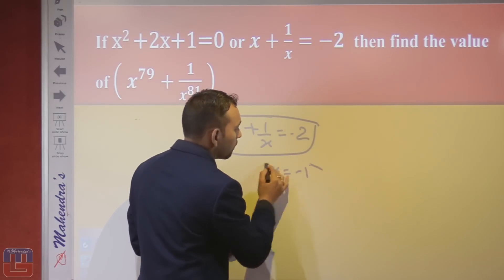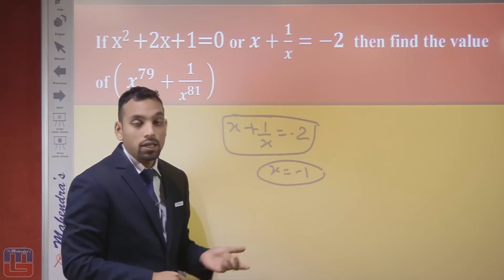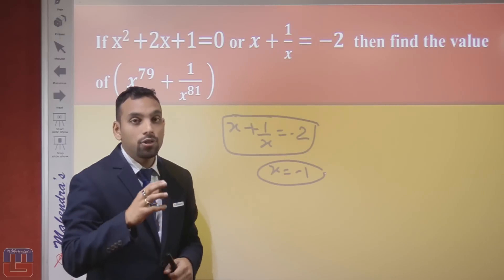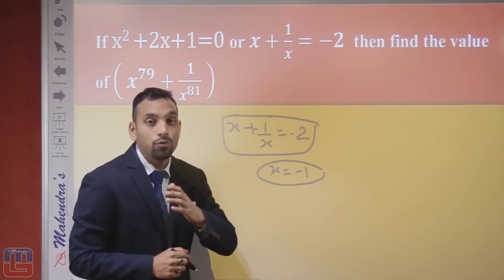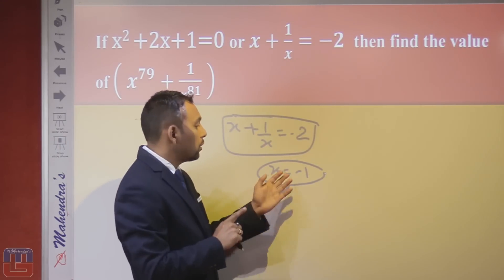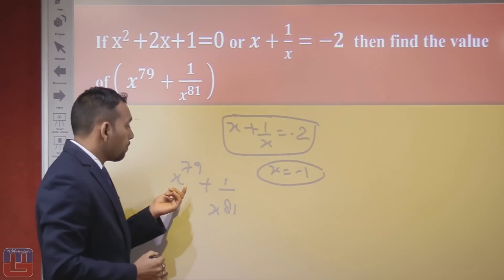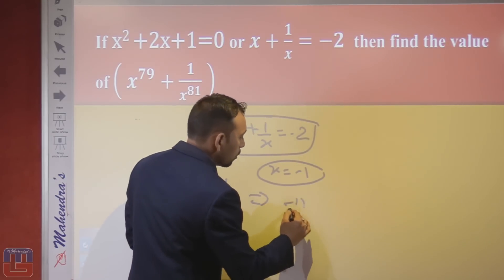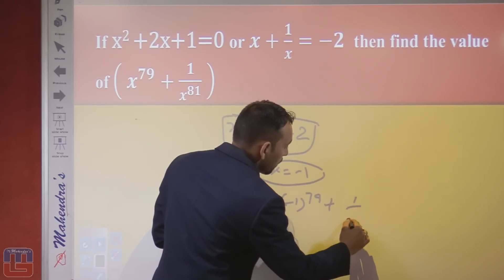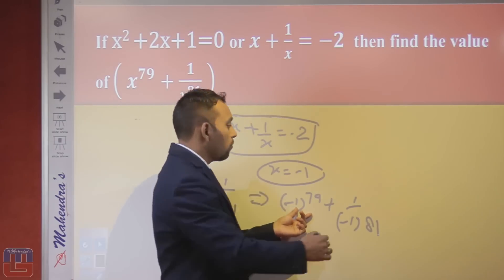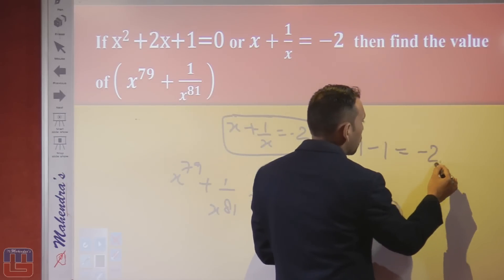If x plus 1 upon x equals minus 2 and we have to find x to the power 79 plus 1 upon x to the power 81, we use the same logic. Putting x equals minus 1 gives minus 1 plus 1 upon minus 1 equals minus 2, which satisfies the condition. So when x plus 1 upon x equals minus 2, x equals minus 1. Now, minus 1 to the power 79 equals minus 1, and minus 1 to the power 81 equals minus 1, so the answer is minus 1 plus minus 1 equals minus 2.